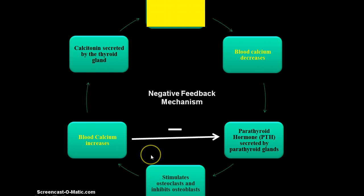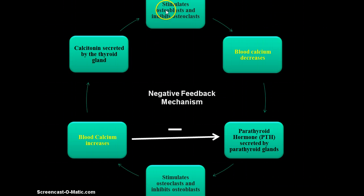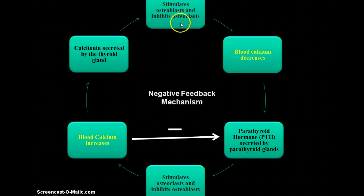Calcitonin will stimulate osteoblasts — it stimulates the building of bone — so osteoblasts will take calcium from the blood and build bone, decreasing blood calcium. It will also inhibit osteoclasts, because breaking down bone would release more calcium into the bloodstream, which is not what we want. When blood calcium decreases back to normal, that will turn off calcitonin secretion by the thyroid gland.